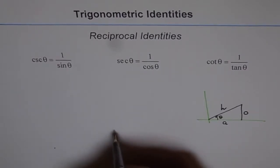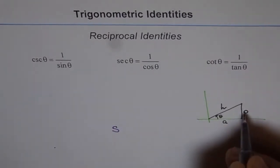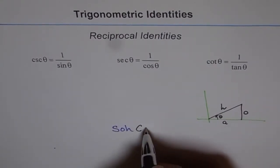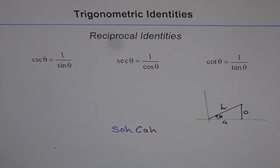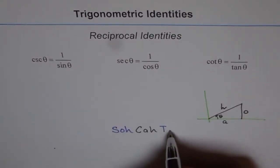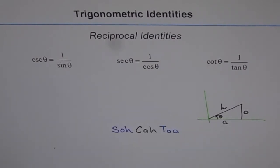SOHCAHTOA gives us: sine is opposite over hypotenuse, cosine is adjacent over hypotenuse, and tangent is opposite over adjacent. This is the basic SOHCAHTOA you need to always remember for the primary trigonometric ratios — sine, cosine, and tangent.